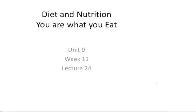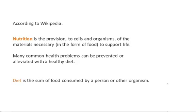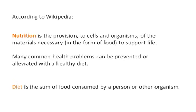In this lecture we're going to warm up to this concept of diet and nutrition and start thinking more in terms of what we're talking about chemically and specifically the language. What do the words diet and nutrition mean? According to Wikipedia, nutrition is the provision to cells and organisms of the materials necessary in the form of food to support life. Many common health problems can be prevented or alleviated with a healthy diet.